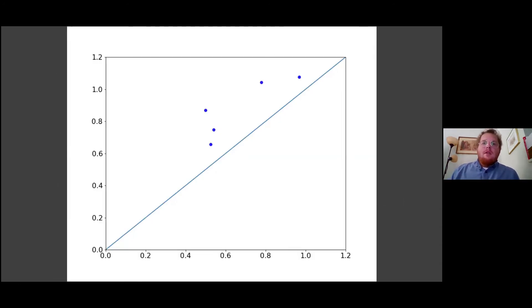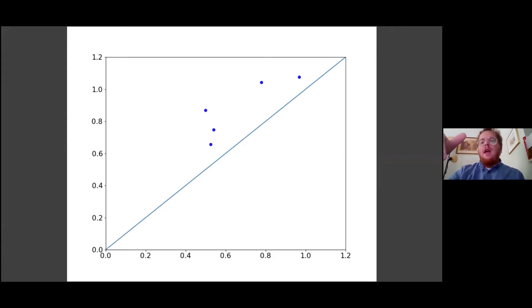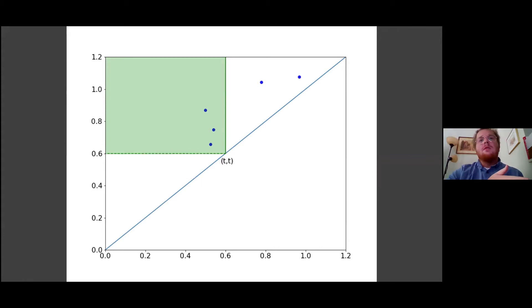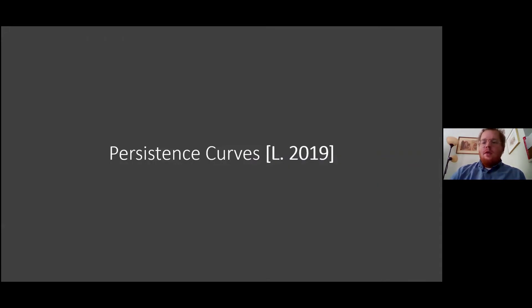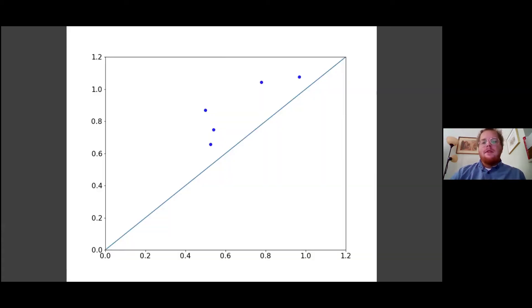Persistence curves derives its inspiration from the fundamental lemma of persistent homology. If we have a persistence diagram and make a cut of a box at some value t, there's a space in the filtration corresponding to t. Counting the number of points in the box at t gives the Betti number for that diagram at that element in the filtration. We can imagine moving this box and continuously counting to generate a function.